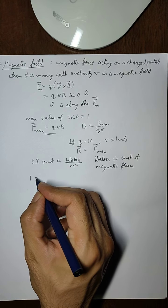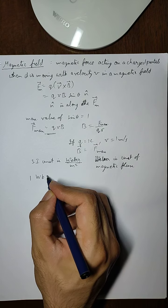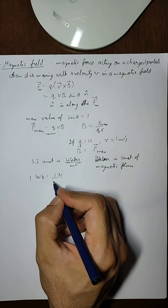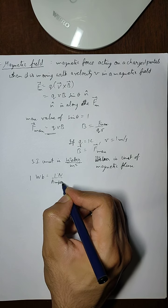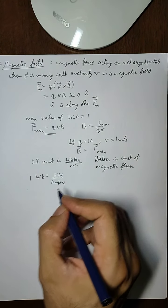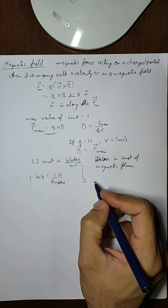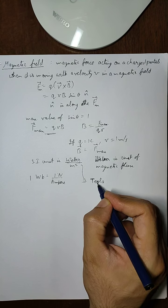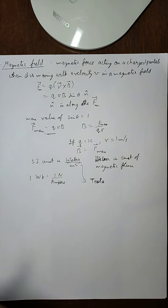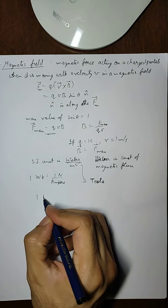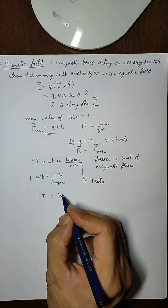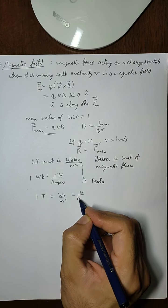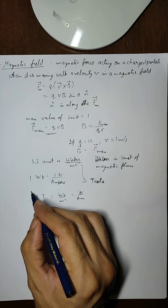This is also written as one Weber equals one Newton per ampere. And this value, Weber per meter square, has another name—it is called Tesla, in the name of a very famous physicist. So we can write here that one Tesla equals Weber per meter square equals Newton per ampere meter.